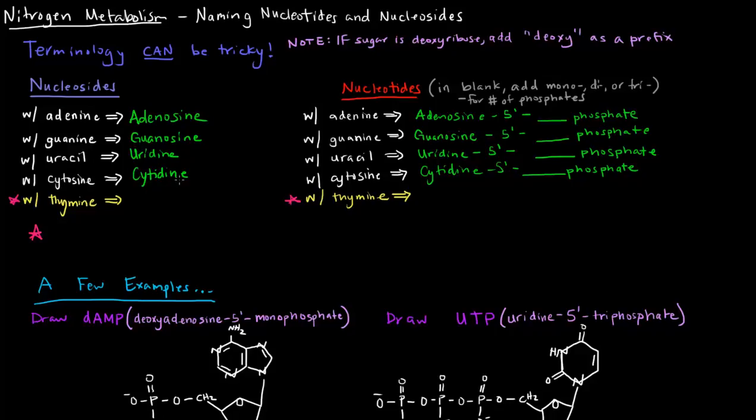Now what if you have thymine? Notice I've written it in yellow and put a pink star next to it. Thymine attached to a deoxyribose would be thymidine. Thymine doesn't attach to ribose because thymine is only in DNA. If you recall DNA having A's, T's, C's, and G's, and RNA having A's, U's, C's, and G's, thymine is only in DNA, so it can only be a deoxynucleoside. So it is called thymidine.